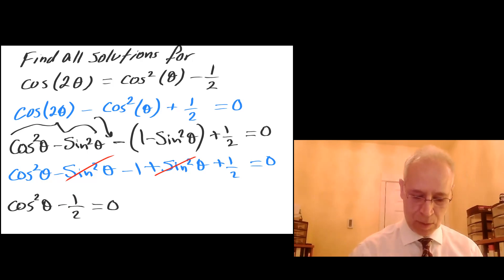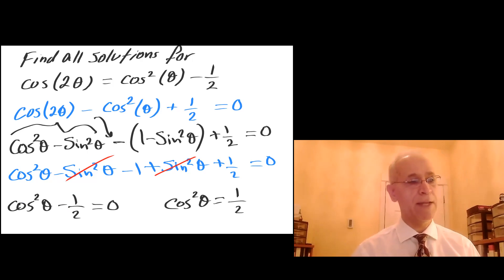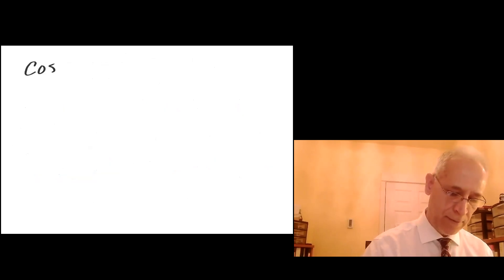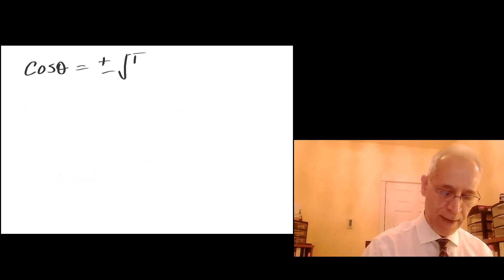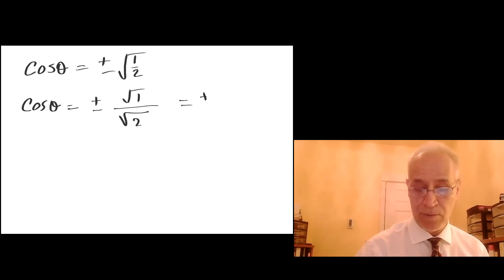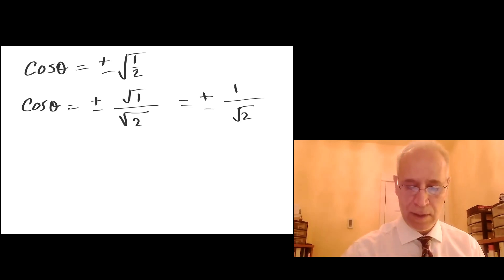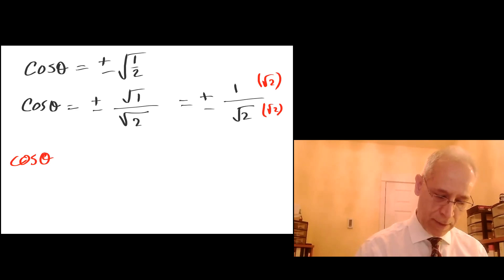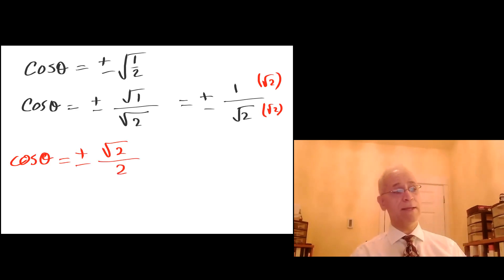So cosine squared of theta equals one half. Let me continue on the next page. Taking the square root of both sides gives cosine of theta equals plus and minus square root of one half, which is plus and minus root two over two after rationalizing the denominator by multiplying top and bottom by root two. And that is very familiar.